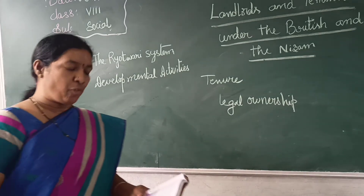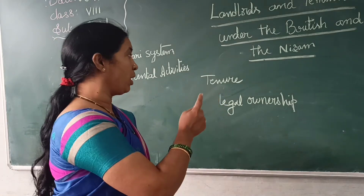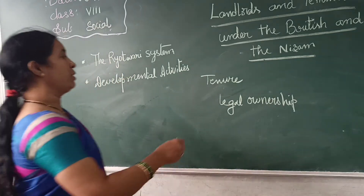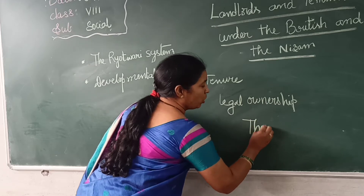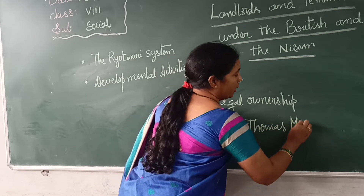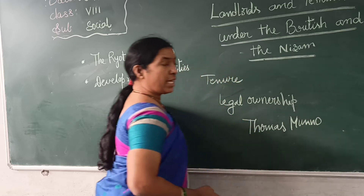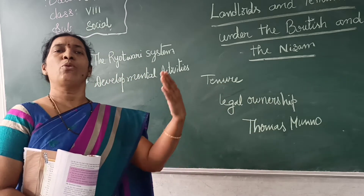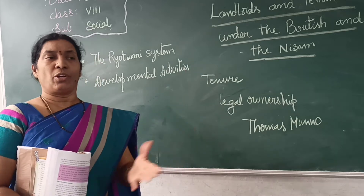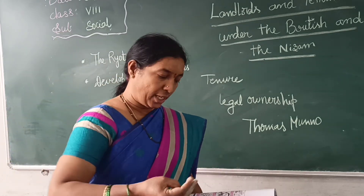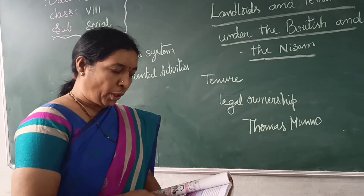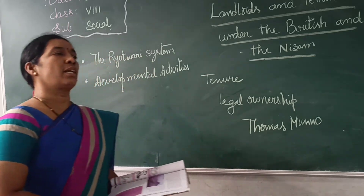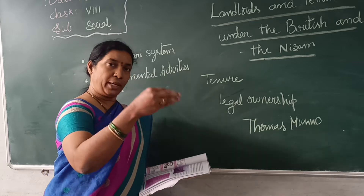In that context, Thomas Munro came as a collector. Before cultivation commencing, Thomas Munro from England decided to give some money to the peasants before cultivating — for buying seeds and fertilizers, for repair charges, for digging new wells and all. He gave money and cooperated with them.